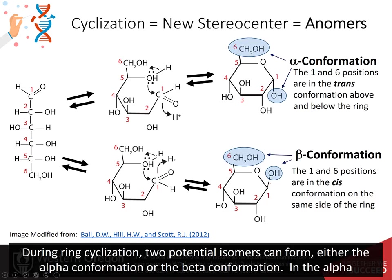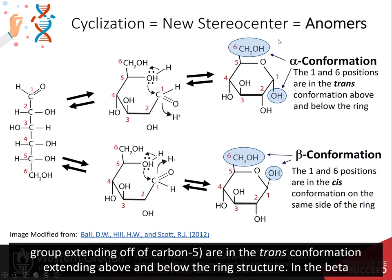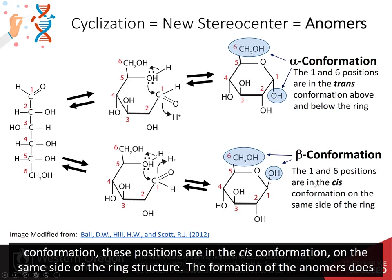During ring cyclization, two potential isomers can form — either the alpha conformation or the beta conformation. In the alpha conformation, the functional groups extending from the carbons attached to the ring oxygen — the OH of carbon 1 and the CH2OH extending off of carbon 5 — are in the trans conformation, extending above and below the ring structure. In the beta conformation, these positions are in the cis conformation, on the same side of the ring structure.